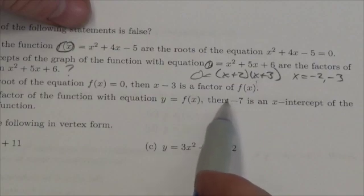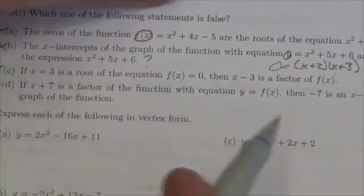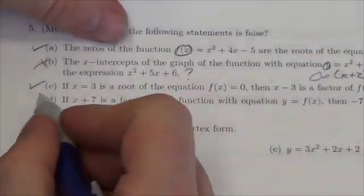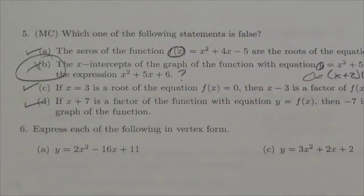So in this case here, negative 7 is the x-intercept, so then x plus 7 is that factor. So they're not exactly the same. That's true. So the answer is definitely B is the false part of that.